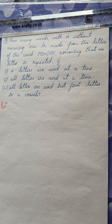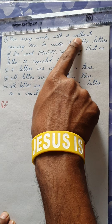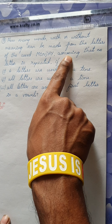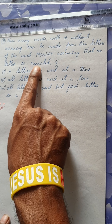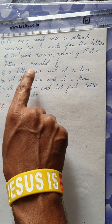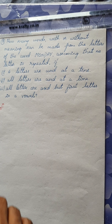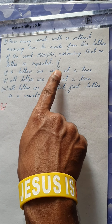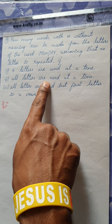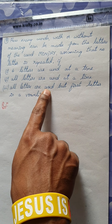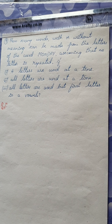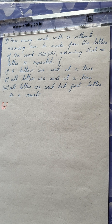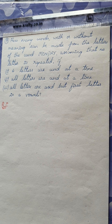Here comes the first question. How many words with or without meaning can be made from the letters of the word MONDAY, assuming that no letter is repeated? The word is MONDAY and repetition of letters is not allowed. The special cases are: first, four letters are used at a time; second, all letters are used at a time; third, all letters are used but the first letter is a vowel.